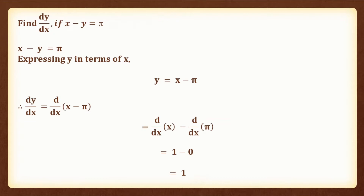The first question is: find dy by dx if x minus y is equal to pi. Expressing y in terms of x we get y is equal to x minus pi. dy by dx will be equal to d by dx of x minus pi, which is equal to d by dx of x minus d by dx of pi. dy by dx of x is equal to 1, and dy by dx of pi, which is the differentiation of a constant, is equal to 0. Therefore the result is 1 minus 0, which is equal to 1.